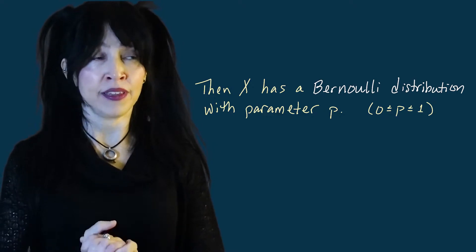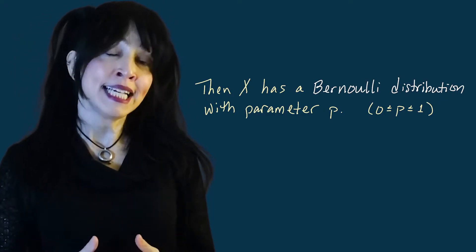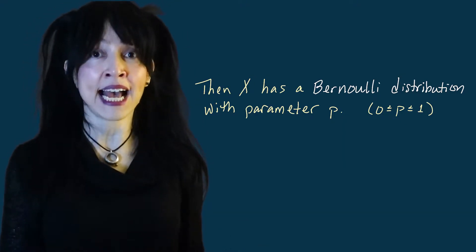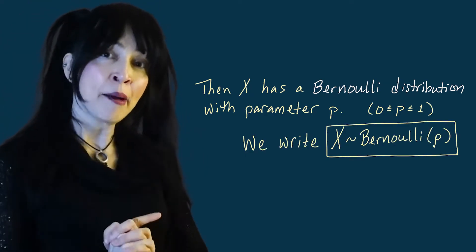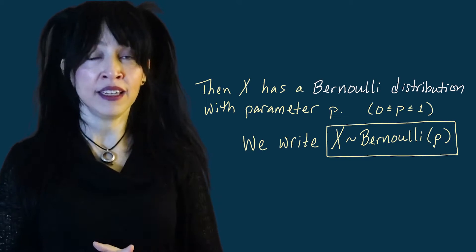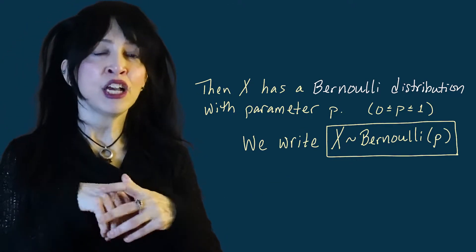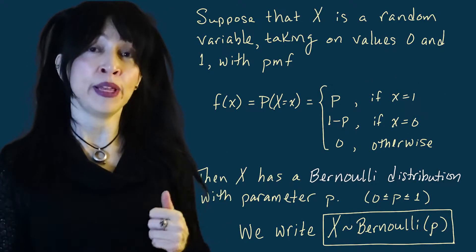We've got our random variable with this probability mass function. If you imagine a number line with zero and one, and histograms at heights of p and one minus p, as you change p you change how the values are distributed. This random variable is said to have a Bernoulli distribution. We say that X is a Bernoulli random variable, and we write that with a capital X, a squiggly line meaning 'has the distribution,' and then Bernoulli of p — sometimes written as Bern(p). In the future, if a problem says 'suppose X is Bernoulli with parameter p,' that means you're working with this probability mass function.